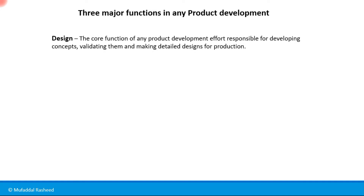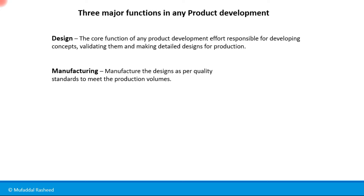Design is the core function of any product development effort, responsible for developing concepts, validating them, and making the detailed designs for production. The design function includes not only design engineering but also fields like industrial design and user experience design. Manufacturing is the next major function, responsible for producing products as per the designs and ensuring they meet quality standards, including setting up the assembly line and infrastructure.